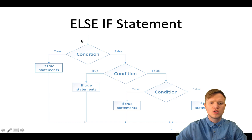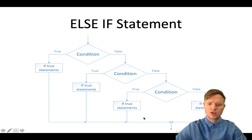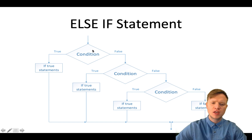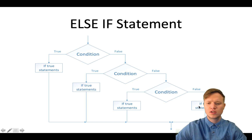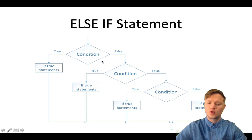First of all we have a condition — that's our first condition in the else-if statement. If this condition is true, we will do some if-true statements and continue with the rest of the code. But if this condition is false, we continue to the next condition. If that condition is true we do something, or else we go to the last if-else part — the if-false statements. You can see it's nested if-else structures inside each other, and we call this the else-if statement.